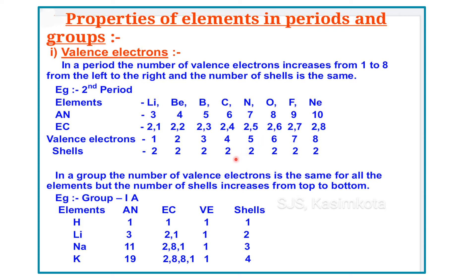Now let's see how valence electrons change in a group. In a group, the number of valence electrons is the same for all elements, but the number of shells increases from top to bottom. When you take group 1A — hydrogen, lithium, sodium, and potassium — the atomic numbers are 1, 3, 11, and 19 respectively.